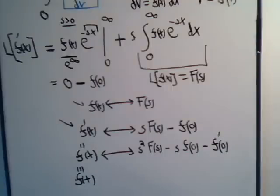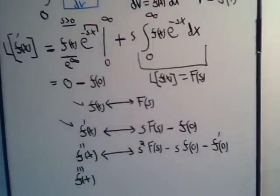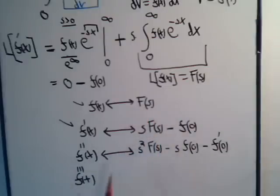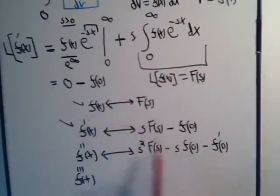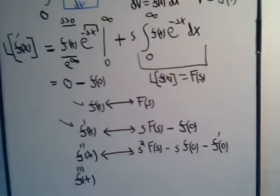What that means is this: we have a function f of x, and we determine what its Laplace Transform is. Now if we take the second derivative of that function, the new Laplace Transform is going to equal s squared times F of s minus s times the function when x is zero, minus we take the derivative of the function and put zero in for x. That then would be the Laplace Transform of the second derivative — we don't have to go and evaluate an integral all over to determine that.